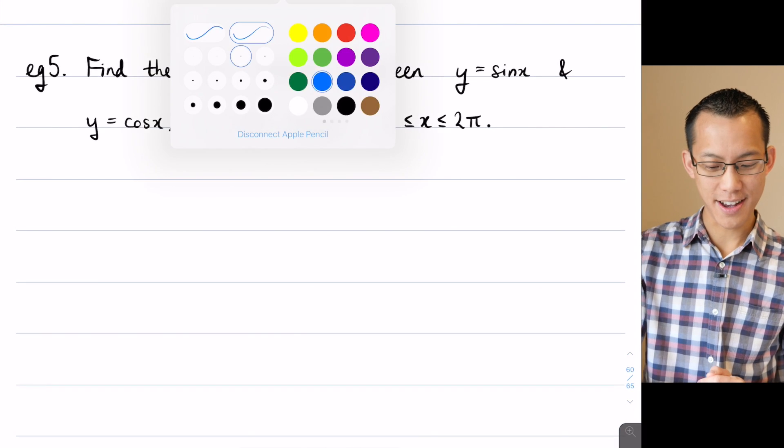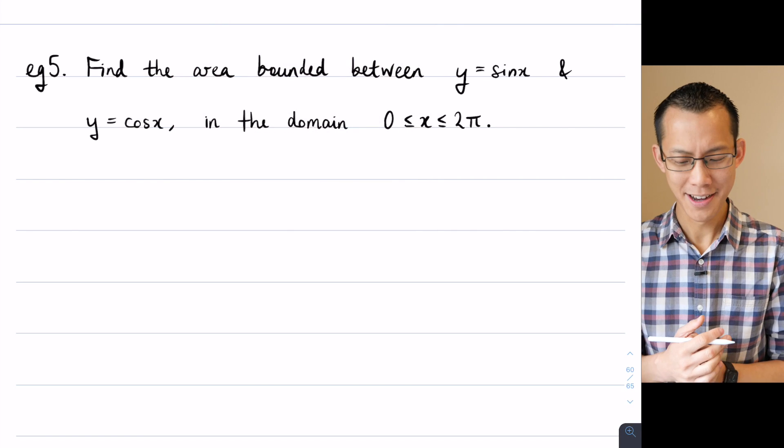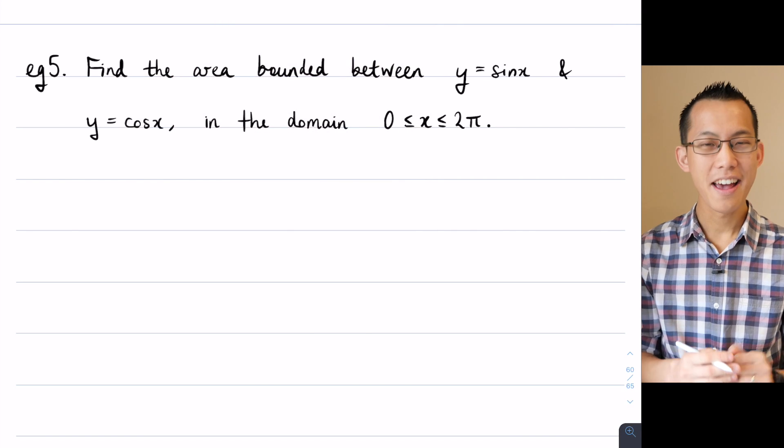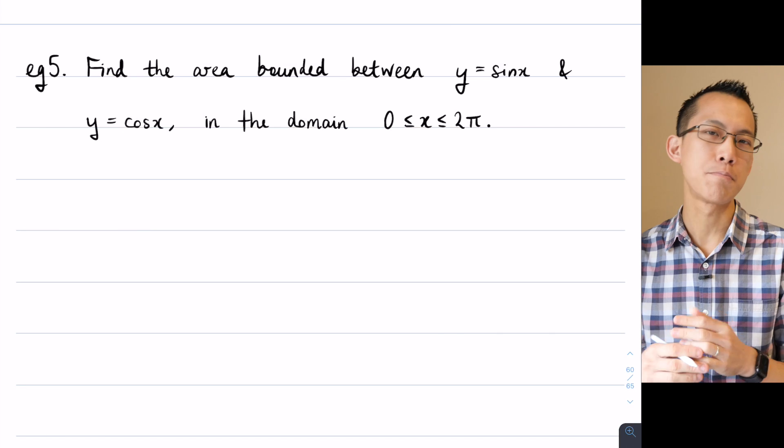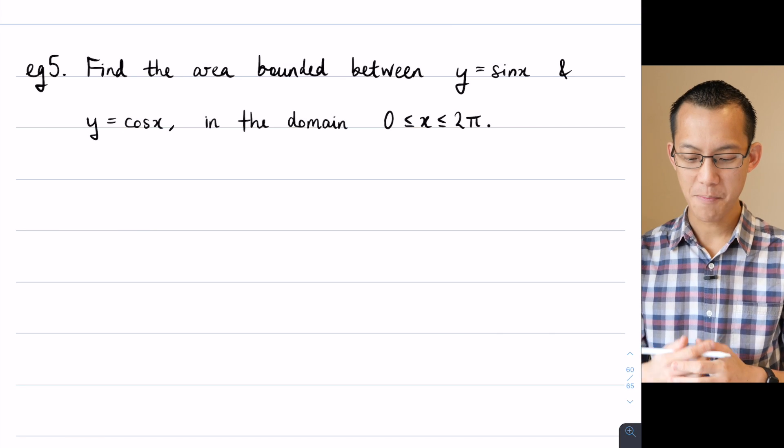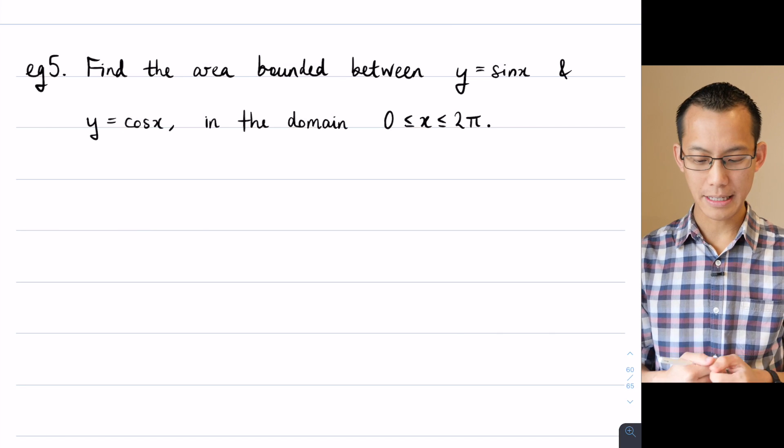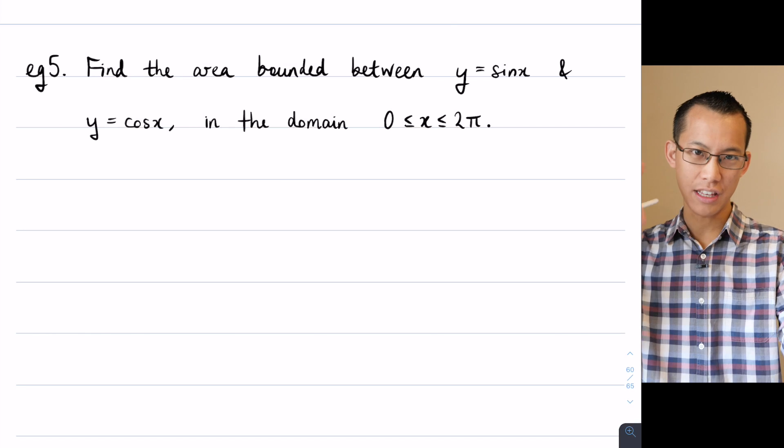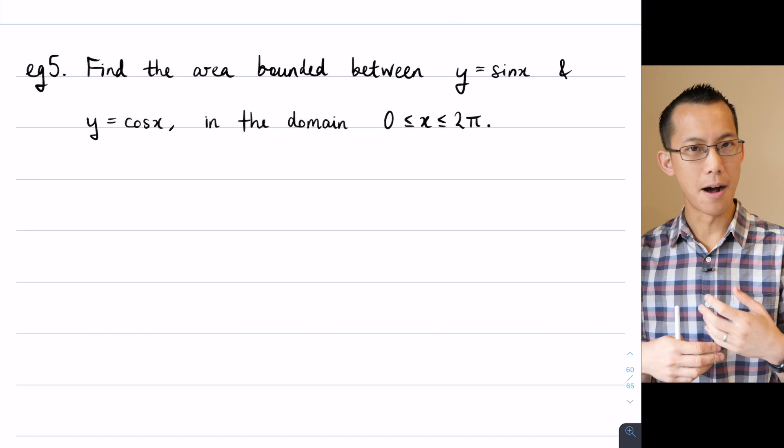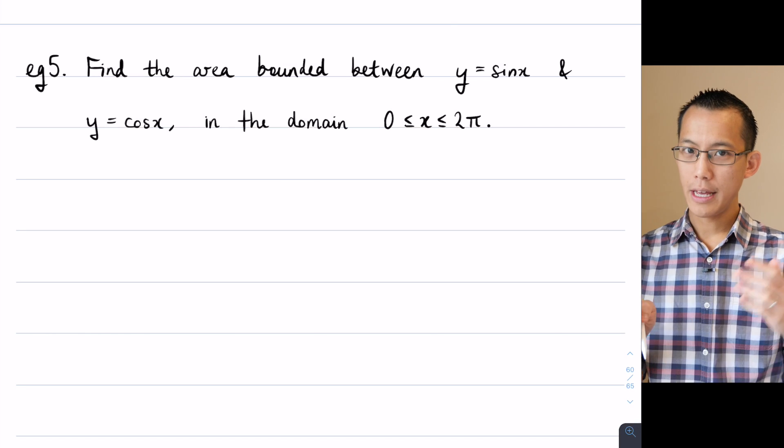Now maybe that's your first roadblock, you're like, I don't know what the sketch of these looks like. Thankfully you've been given the most basic kinds of trigonometric functions there are, y equals sine x, y equals cos x and you've been given them in what we call like the standard domain, the domain you encounter all the time from 0 to 2π.